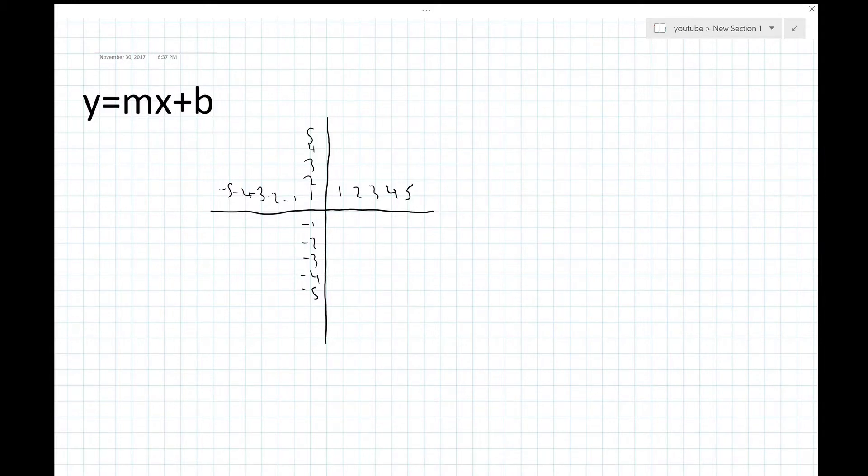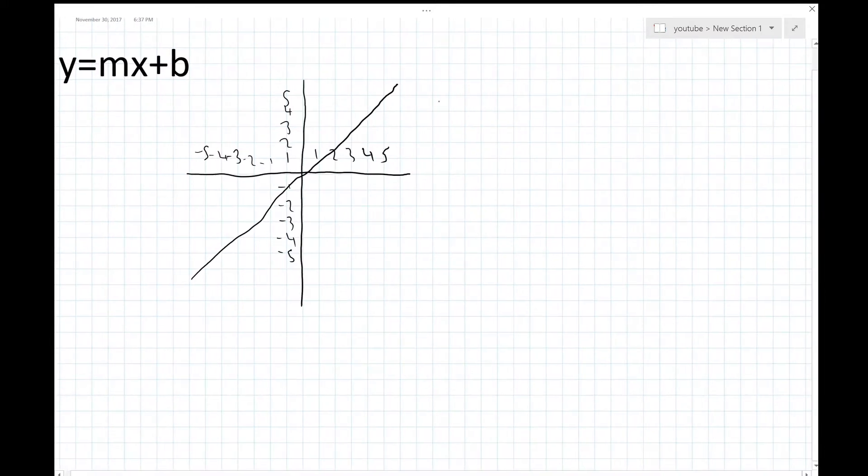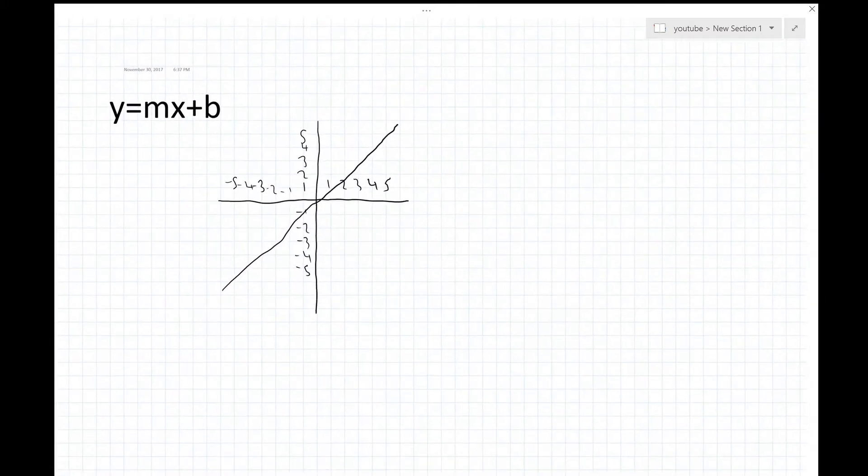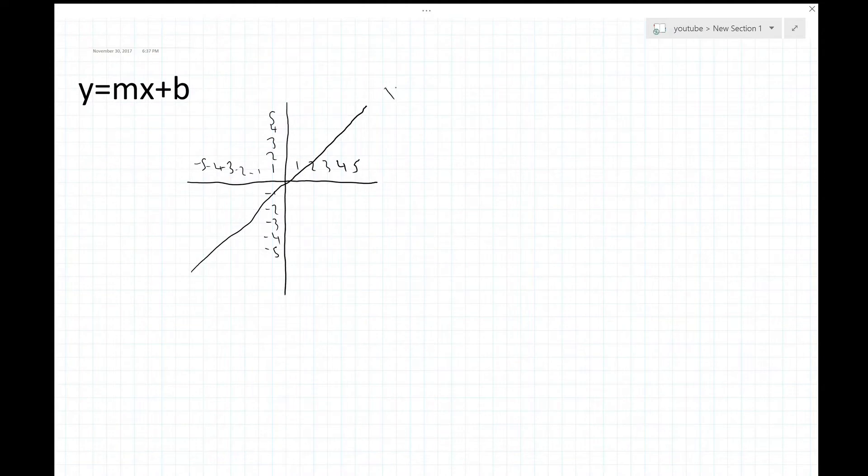Alright, so for the sake of an example for this video, we're just going to use this perfect diagonal line. It would be a perfectly straight line on a graph. If you don't know, the equation for this line is called y equals x, and we'll get into why that is when we get into y equals mx plus b.